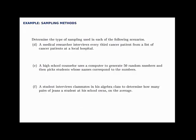Next, a medical researcher interviews every third cancer patient from a list of cancer patients at a local hospital. The key here is the term 'every third,' which identifies this as systematic sampling. Systematic sampling is where we have a list and we pick some step — like every third, every fifth, or every tenth — and that systematic moving through the list is what makes it systematic sampling.